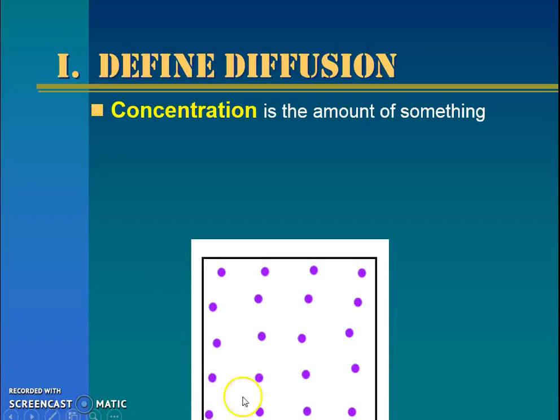When there was a lot of stuff in this corner, that was a high concentration of that purple stuff. When it's spread around, that's a low concentration.